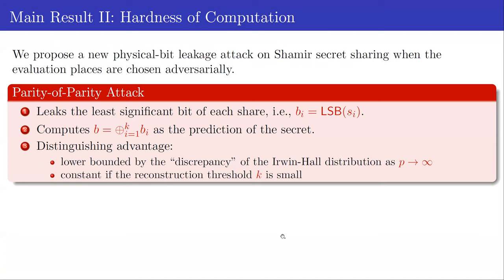To complement the first result, we propose a new physical leakage attack. We show that when the evaluation points are chosen badly, the Shamir secret sharing scheme is not leakage resilient for a small reconstruction threshold. We call our attack the parity-of-parities attack. It leaks the least significant bits of each share, then computes a bit B as the parity of the XOR of all leaked bits. This serves as a prediction for the secret, and we show that the advantage is lower bounded by the discrepancy of certain aggregate distributions as p tends to infinity.